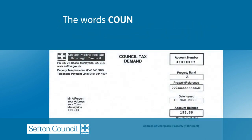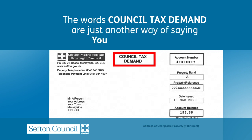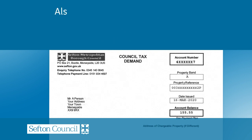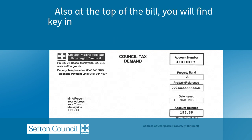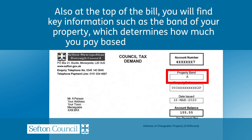The words 'council tax demand' are just another way of saying your council tax bill. Also at the top of the bill, you'll find key information such as the band of your property, which determines how much you pay based on where you live.